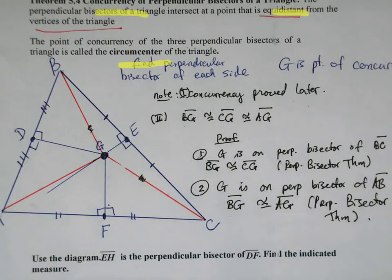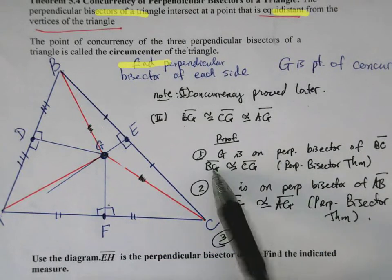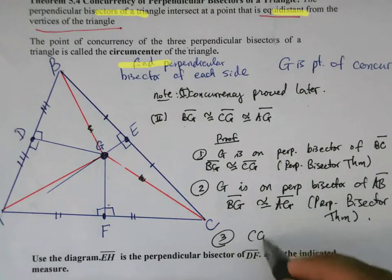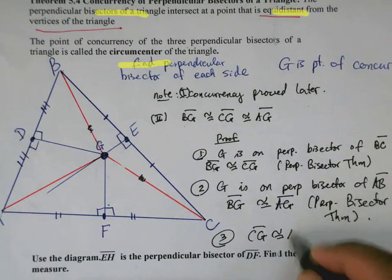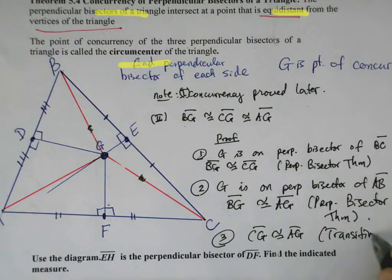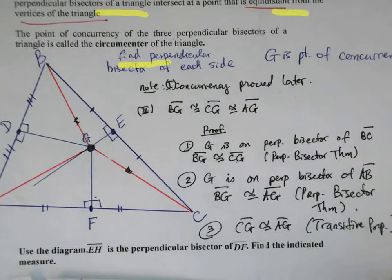And finally, then we can say, since BG is equal to CG, and BG is equal to AG, that CG then is congruent to AG as well. And this is the transitive property. And there you have it, the complete proof, or I'm sorry, not the complete proof, but really just the second part of the proof that this point here is equal distant from each one of the vertices.